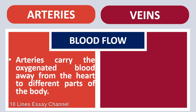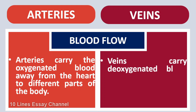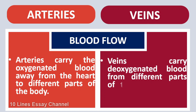Arteries carry the oxygenated blood away from the heart to different parts of the body. Veins carry deoxygenated blood from different parts of the body to the heart.